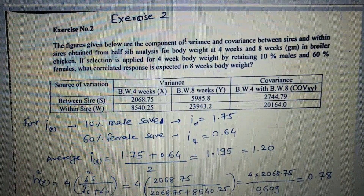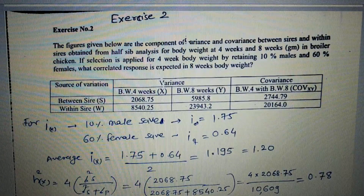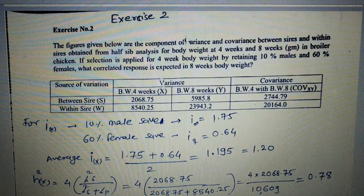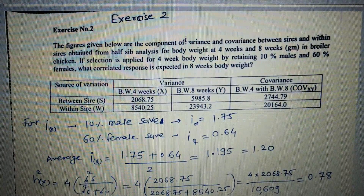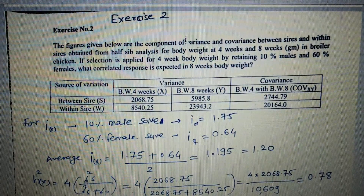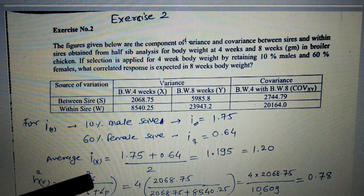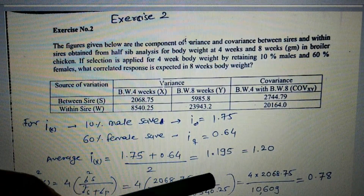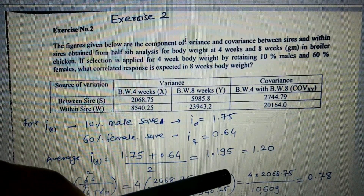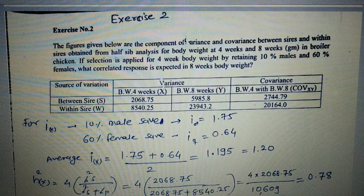For selection intensity: 10% male saved means i = 1.75, and 60% female gives i = 0.64. So the average intensity will be 1.195, which we round to 1.20.